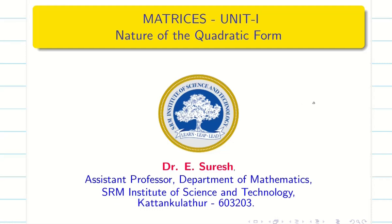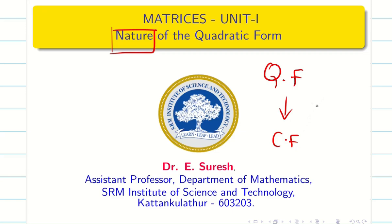Dear students, welcome to this session. In today's session, we are going to find the nature of the given quadratic form without reducing to canonical form — that is, without finding the eigenvalues. This is our topic. In exam point of view, they will ask you to find the nature of the quadratic form without finding the eigenvalues.